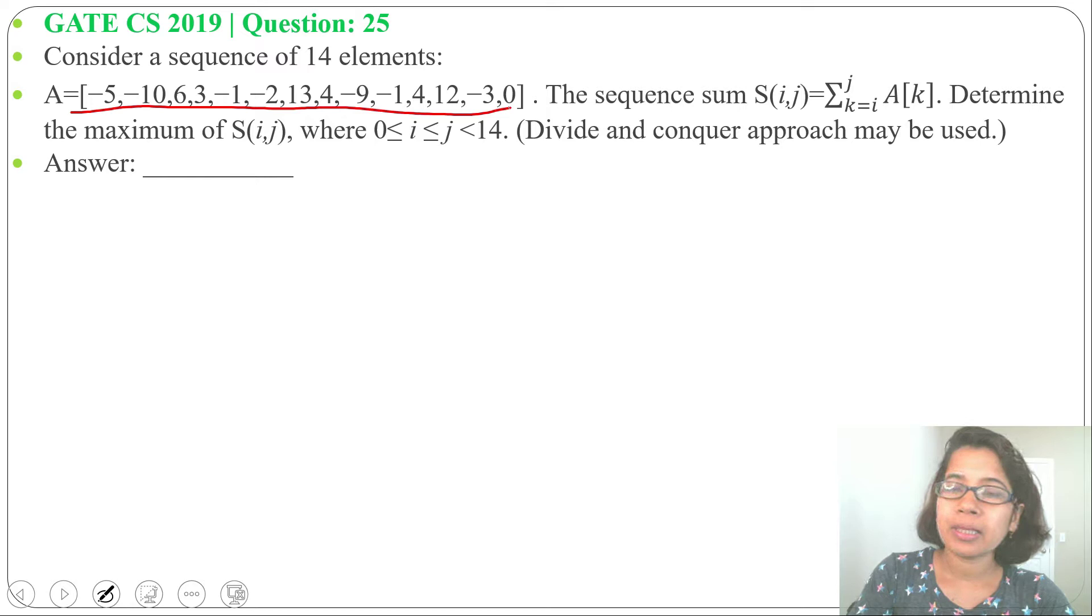This sequence sum S(i,j) equals sum k value range from i to j, A of k. Determine the maximum of S(i,j) where 0 less than equals to i less than equals to j less than 14. Divide and conquer approach may be used and it is asking for the answer.